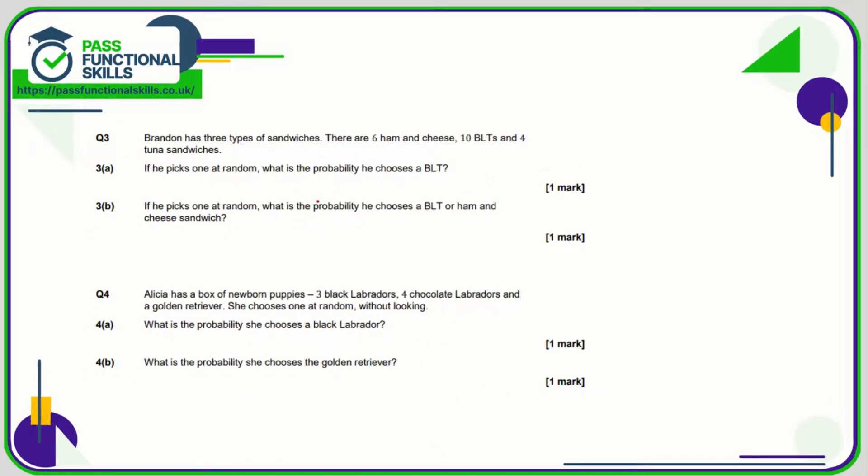Question three: what's the probability of choosing a BLT when there are a total of 20 sandwiches? Well it's 10 out of 20 and that is the same as 1 out of 2, a half. What's the probability of choosing BLT or ham and cheese? So that's 10 plus 6, which is 16 out of the 20 are BLT or ham and cheese, and 16 out of 20 is the same as 8 out of 10, which is the same as 4 out of 5. So any of these answers are acceptable.